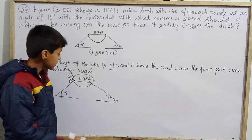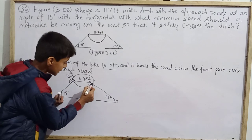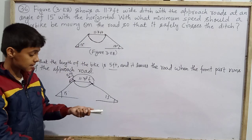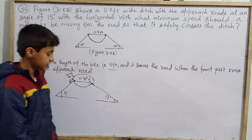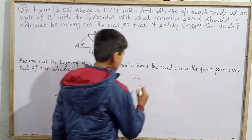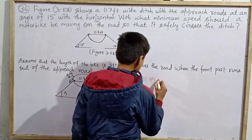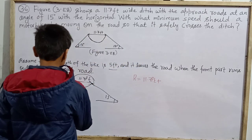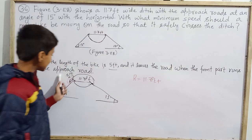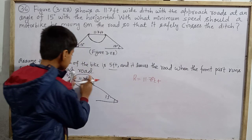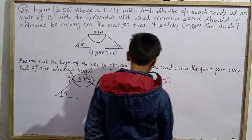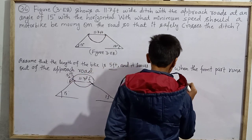Let's find what minimum speed should be. For that, what should the horizontal range be? The horizontal range must be 11.7 feet plus the length of the bike. Since the bike is not a point particle but has length 5 feet, the total distance it must cover is: horizontal range = 11.7 + 5 = 16.7 feet. So this is our horizontal range. Let's write the formula: horizontal range R = u²·sin(2θ) / g.